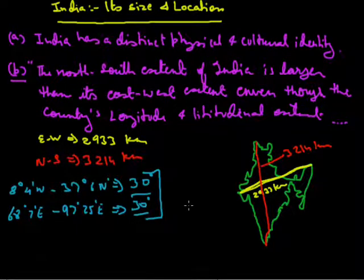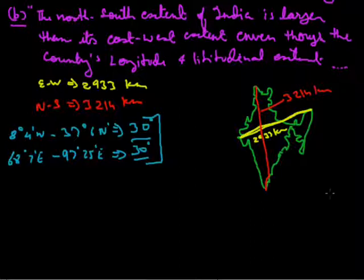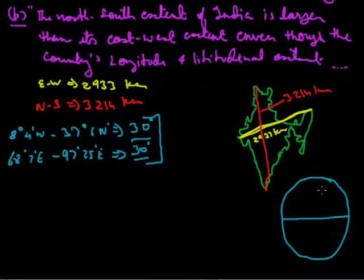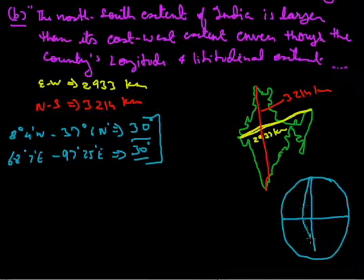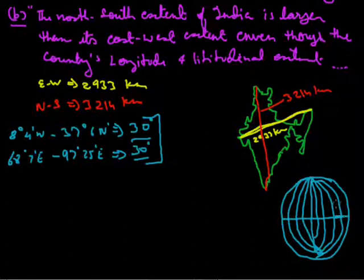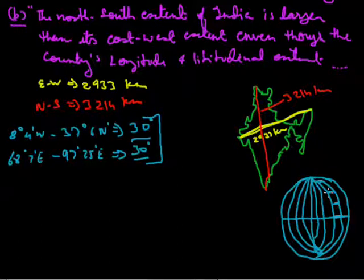On earth, latitudes are parallel, but longitudes are not parallel. Longitudes are very close to each other at the poles, far apart at the equator, and then converge again. So the actual distance represented by the same number of degrees differs depending on where you are.